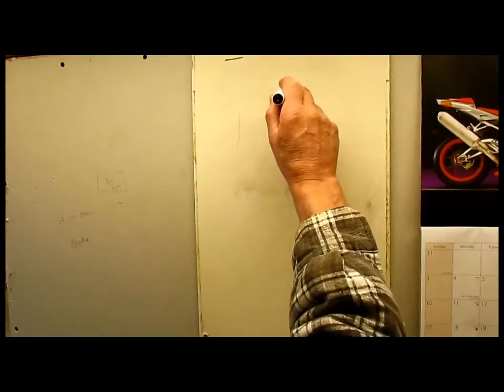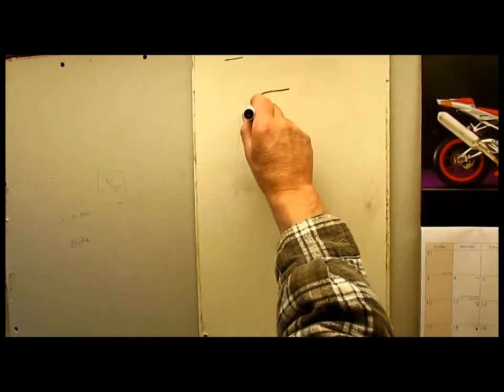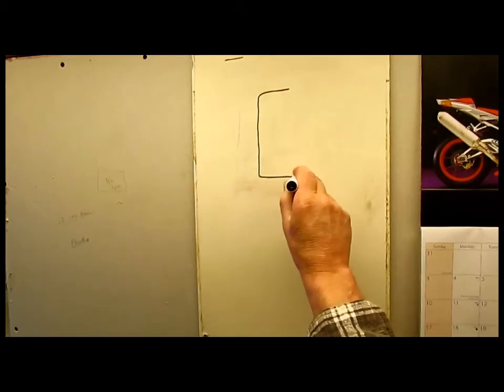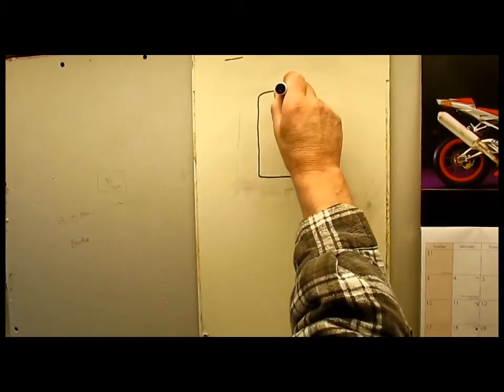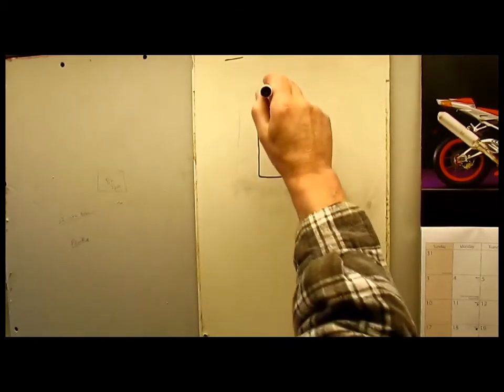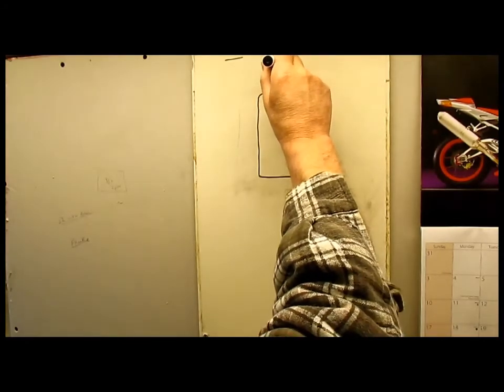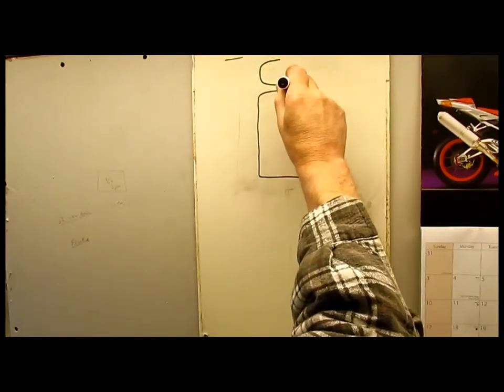The other type is what we call a pressurized system. You might hear it called a mega flow system, a sealed system. But what's reliant on is water pressure. You've got a cylinder the same, but you've no tank, you've no tank above. But what you will have is a pressure vessel.